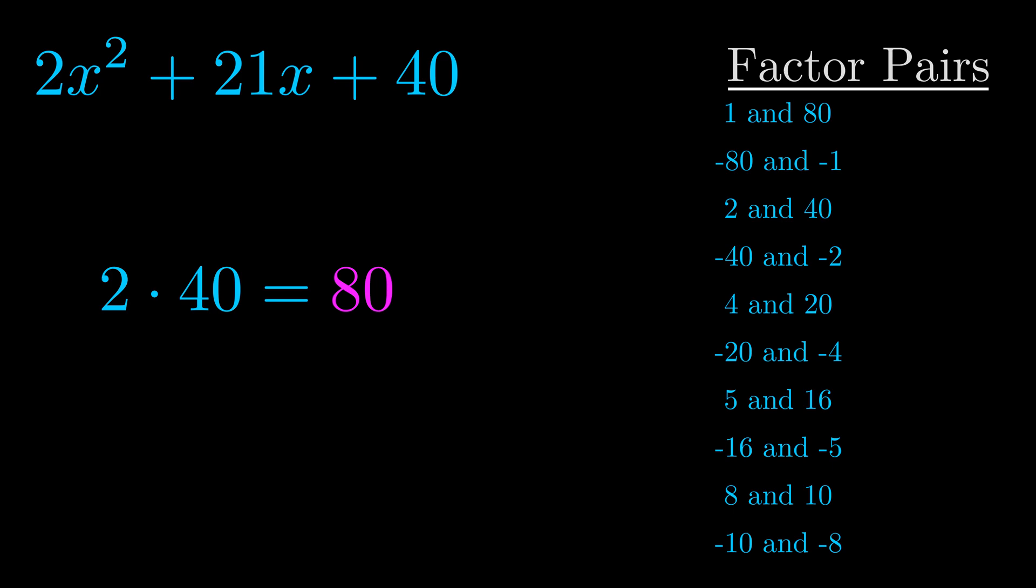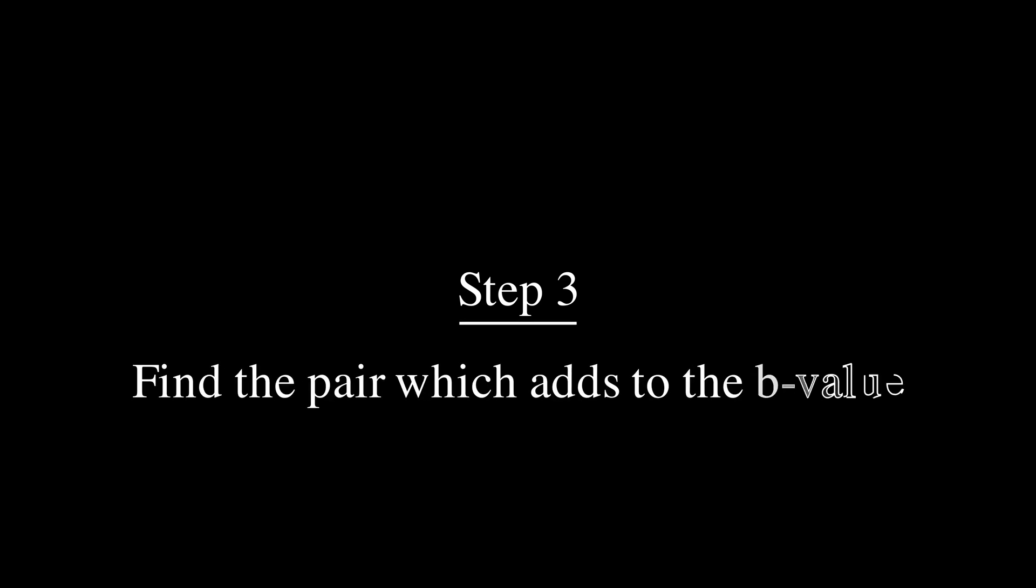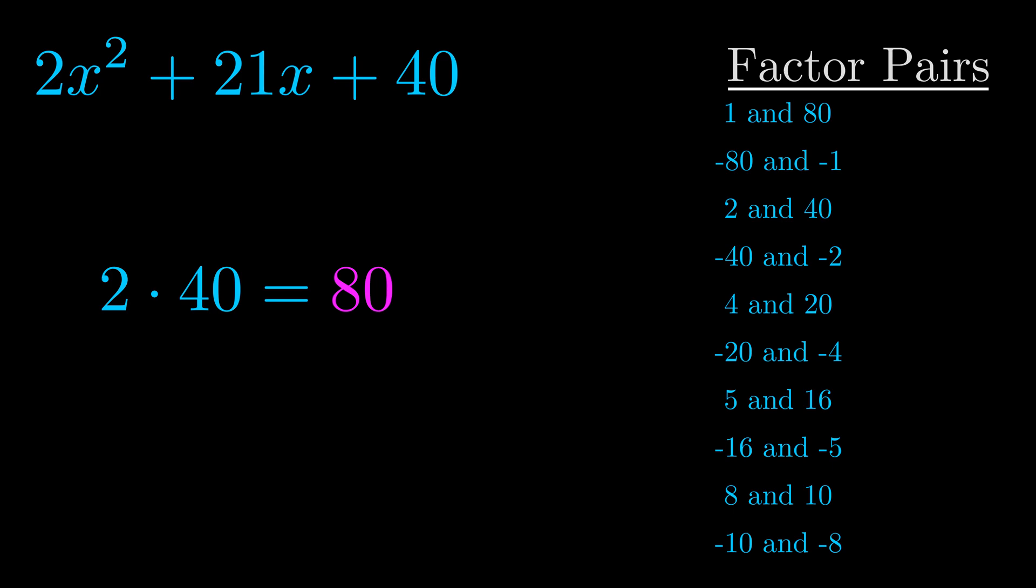Now once you have these factor pairs, the goal is to find which of these pairs adds to the b value. The b value is the coefficient on the x term. That's the middle term, the one that we haven't done anything with yet. And really this is the only factor pair that we need.